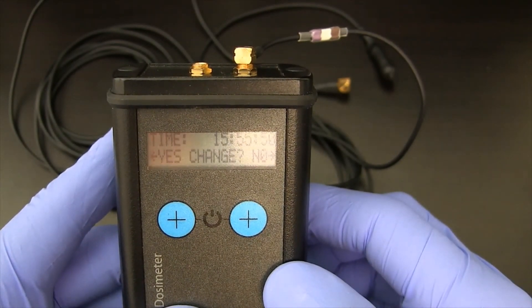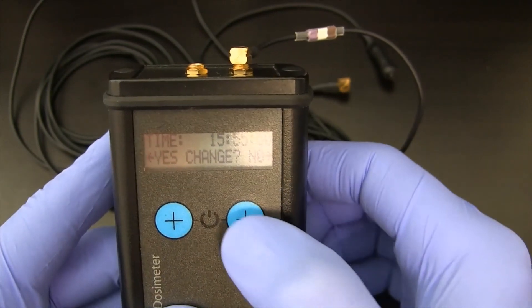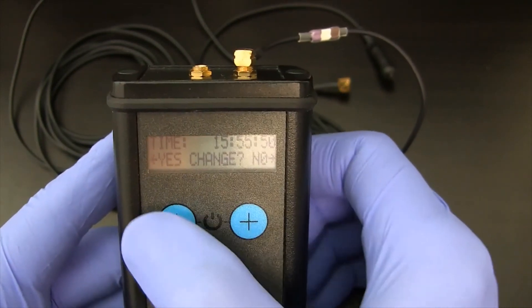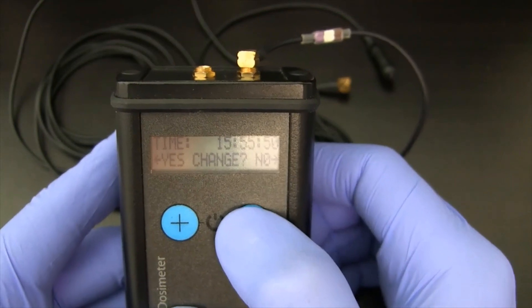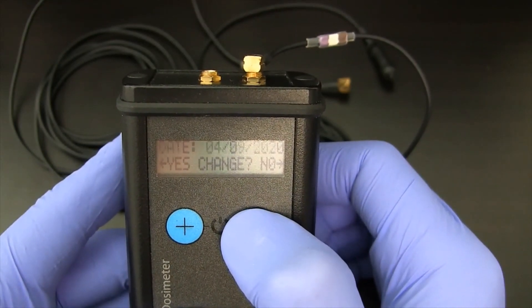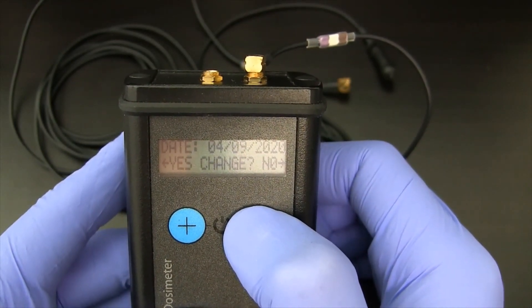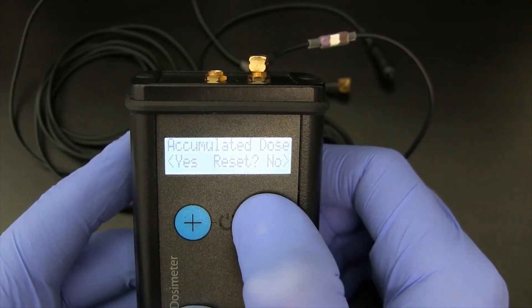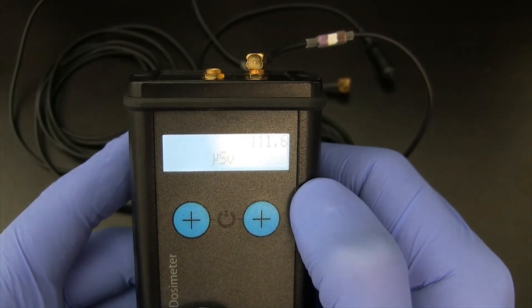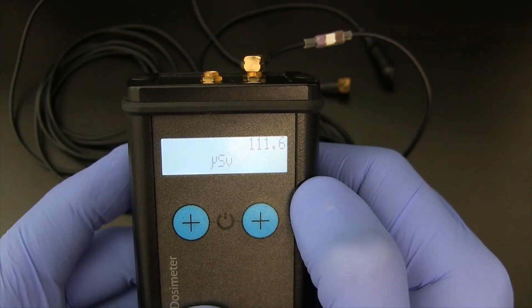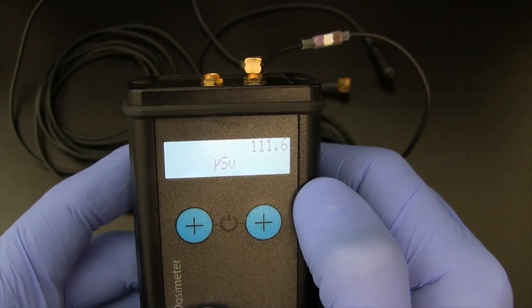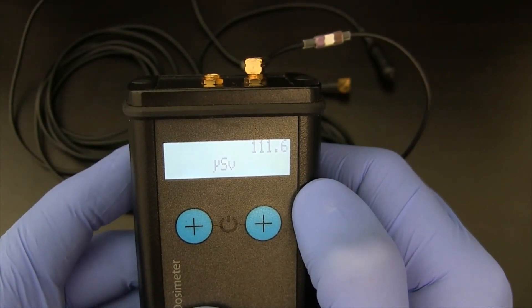So we're going to go and add a probe back onto the unit. And we're going to actually turn it back on. You can see the CAL. Whether or not we want to change the date and time, we don't. If we did, we'd just select yes and it would cycle through each of the date-time sections. We're not going to reset the accumulated dose. And now because I only have one detector, you'll see just that side populated with the accumulated dose.